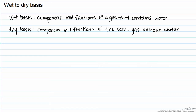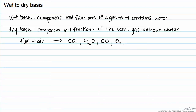What I'm talking about is the products of a combustion reaction. So if we combust a fuel with air, we have coming out in the product stream: CO2, H2O, and if it's incomplete combustion, we'll have carbon monoxide. We can also have excess oxygen, we'll have the nitrogen from the air, and possibly some unconverted fuel as well.